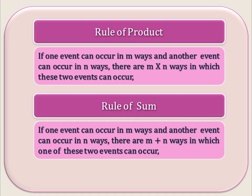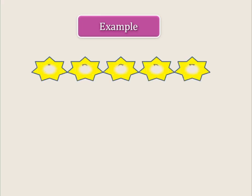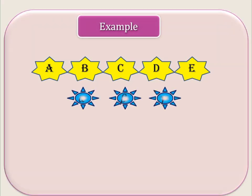Next we see some examples based on the rule of product and rule of sum. Consider the first example. Let us take 5 letters A, B, C, D, E, and the Greek letters Alpha, Beta, Gamma.